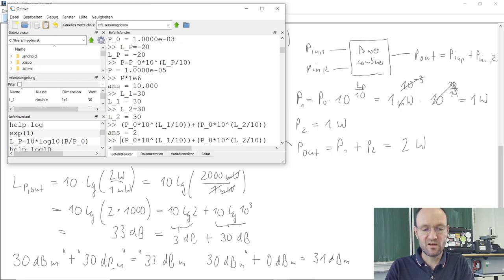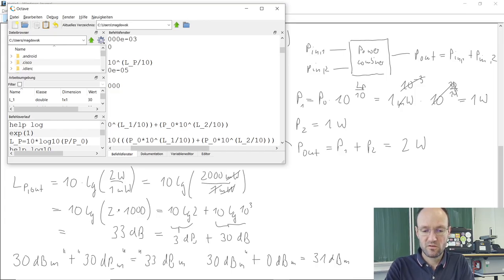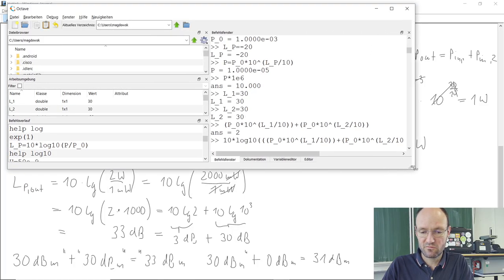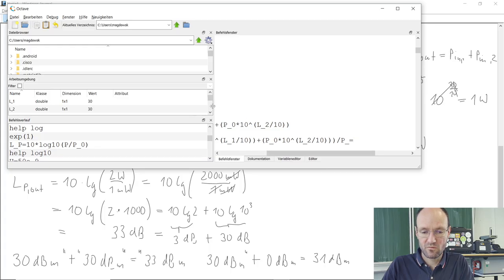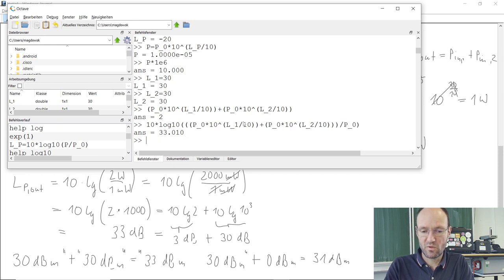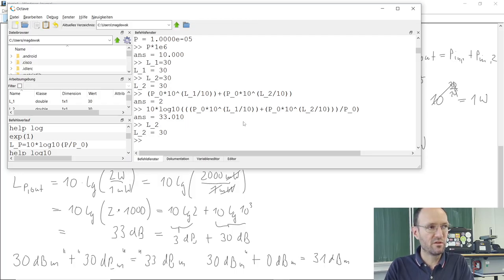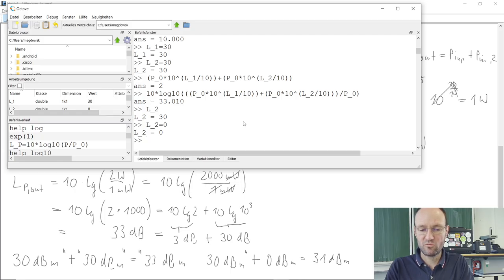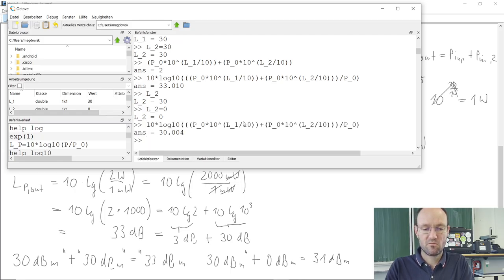And so, now from this result, we once again take 10 times log 10 of this power divided by our reference power. The line seems not to be long enough. Okay, so, divided by the reference power and then parenthesis close, so we get 33, which works nicely. Okay, so, now let's change the second power level from, which was 30 now. Now, let's change it into 0. And we can redo the calculation.